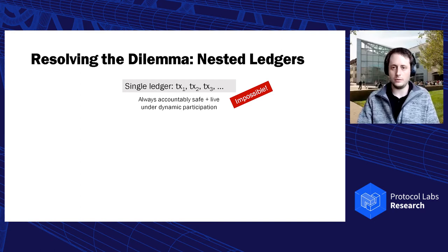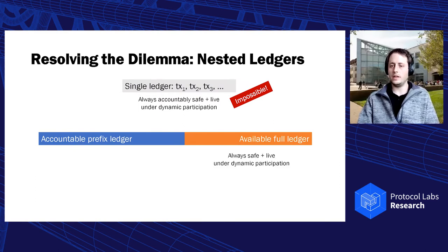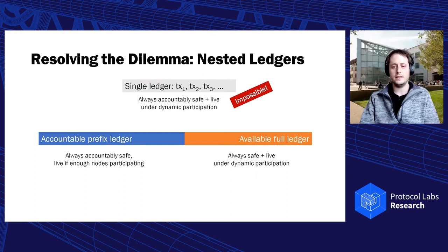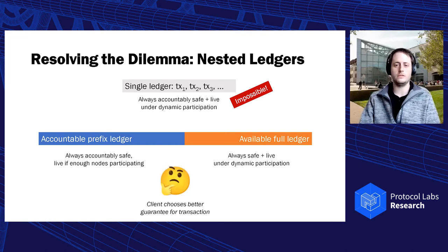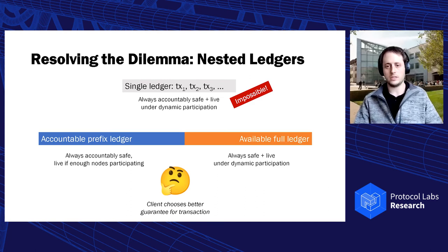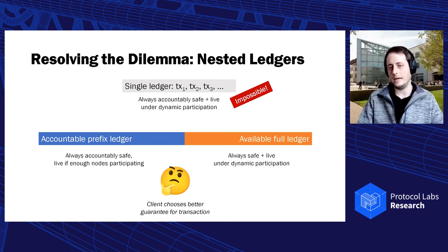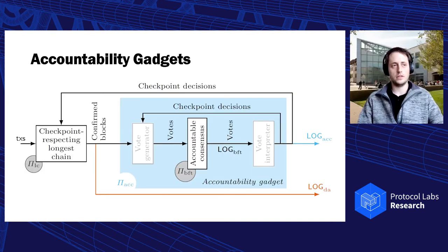Since we cannot have a single ledger that is always accountably safe and live under dynamic participation, we propose to resolve this dilemma by decomposing the single ledger into two nested ledgers: an available full ledger and an accountable prefix ledger. The available full ledger is always safe and live under dynamic participation. The accountable prefix ledger is always accountably safe and is live if enough nodes are participating. It's up to clients to choose which ledger to use — for high-value transactions that should not get rolled back, wait for the accountable prefix; for low-value transactions where speed matters, the available full ledger may suffice.